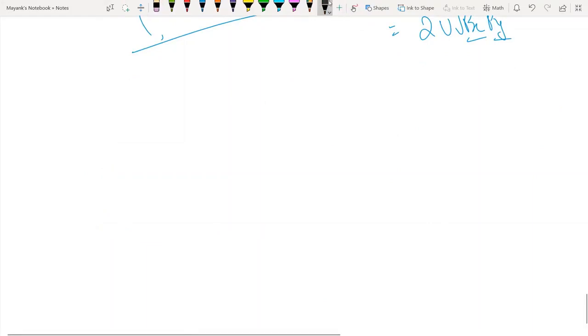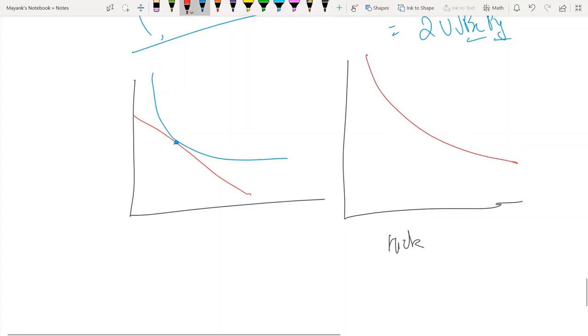Marshallian demand was fixing your budget line and then finding the indifference curve tangent to it, and Hicksian demand was fixing your indifference curve and finding the budget line tangent to it. So if this budget line and indifference curve combination is such that this U star becomes same as this U not here, or if the income here becomes the same as the budget you calculate in this case, then in either of the cases the calculated point should be the same.